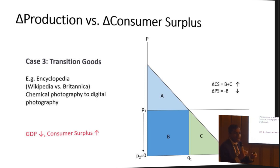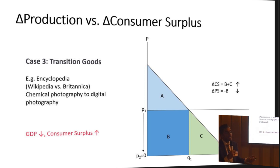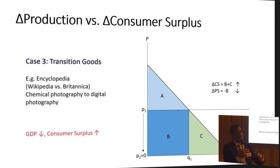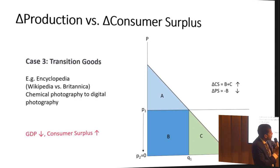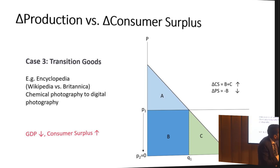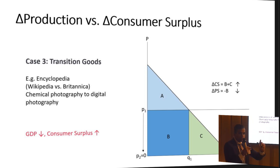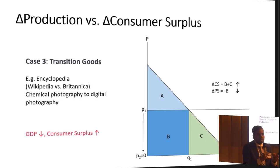It gets even worse when goods transition from paid physical goods to free digital goods. A really good example is the encyclopedia industry. Many of us used to spend several thousands of dollars buying all those volumes of Britannica. Now we get all of that knowledge for free and more on Wikipedia. As a result of this shift, the rectangle area goes down to zero, so GDP would go down. But consumers are clearly better off because they now have all the consumer surplus they had before, plus more. So not only are GDP and well-being not correlated — in fact they might go in opposite directions when free goods substitute paid goods.